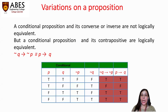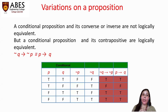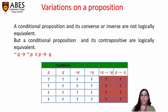The conditional proposition and its converse or inverse are not logically equivalent. Two propositions are logically equivalent when their truth tables hold the same values for the same set of truth values. However, a conditional proposition and its contrapositive are logically equivalent. As seen from the truth table, P → Q and ¬Q → ¬P both hold the same truth values — true, false, true, true — for the same combinations of P and Q.